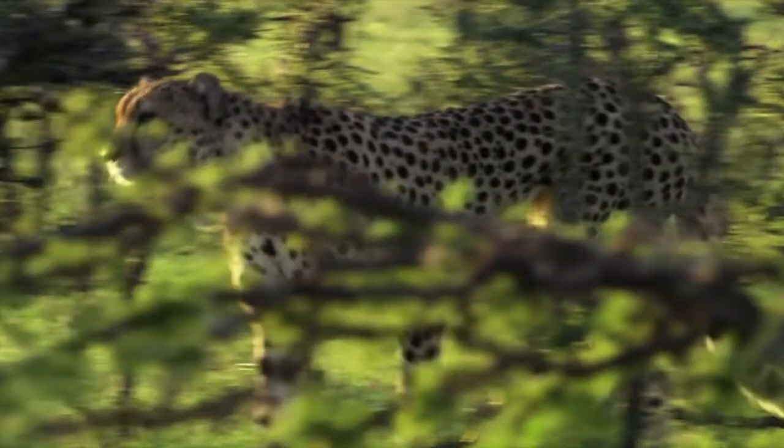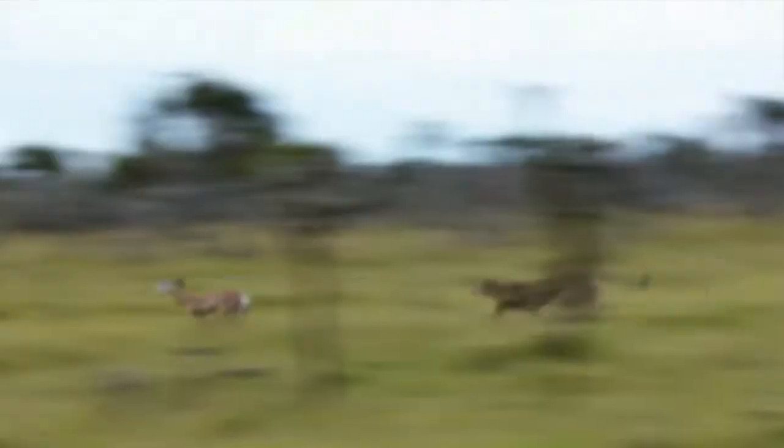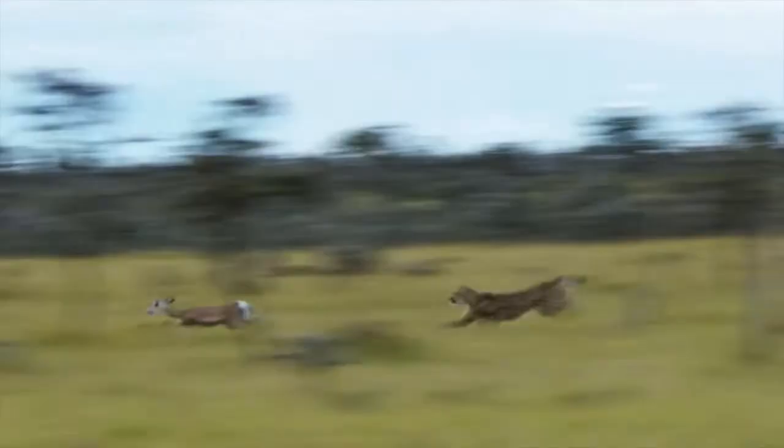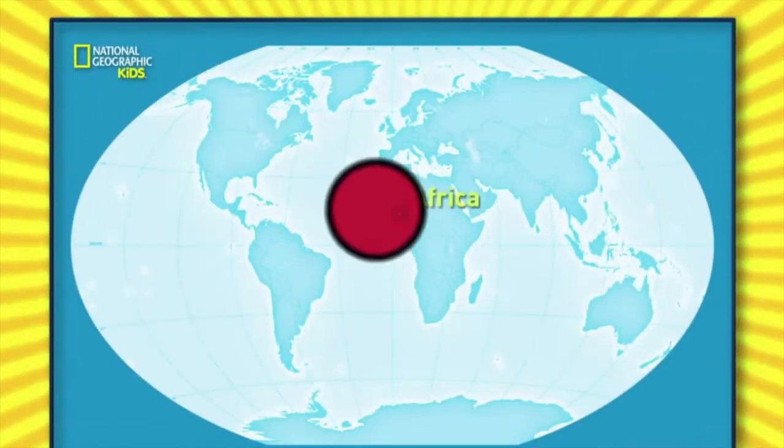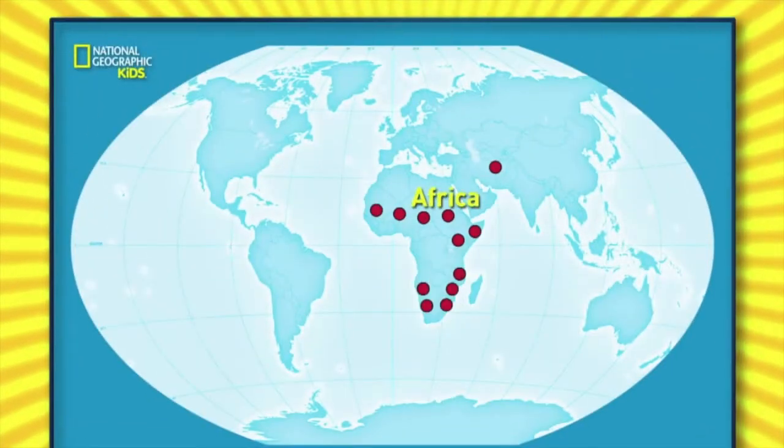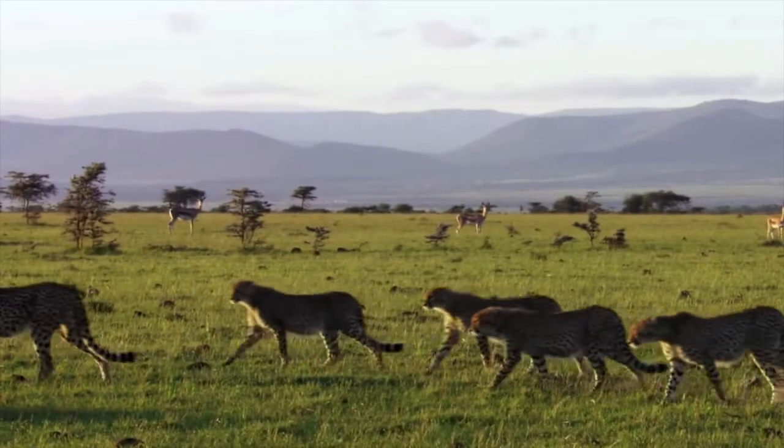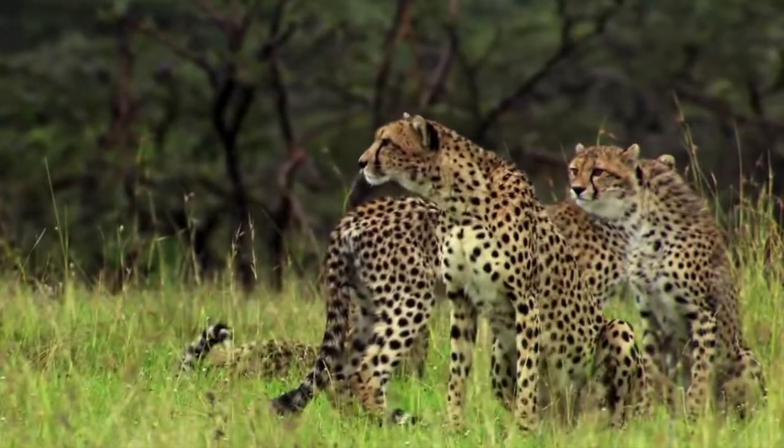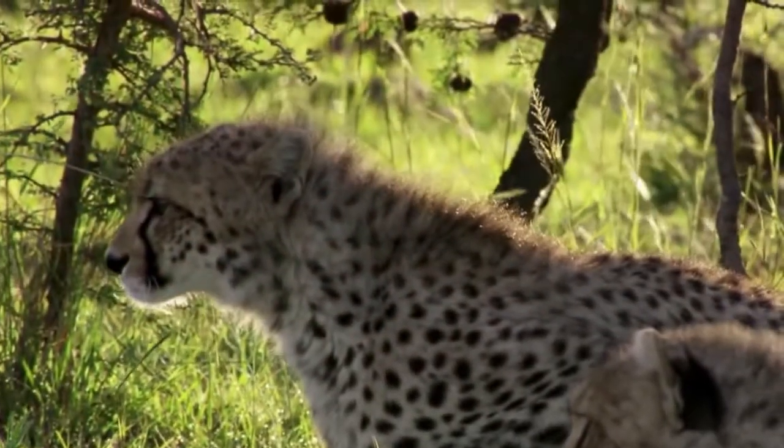This famously spotty feline is the fastest land mammal on earth. Not at the moment she's not. I am. Get off. Found mostly in Africa, these animals may be speedy but their populations are shrinking. A mother cheetah looks after her cubs until they're around two years old. She's taught us everything we know.